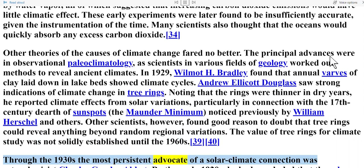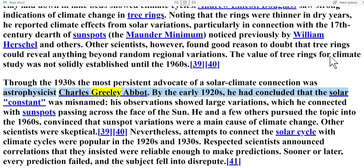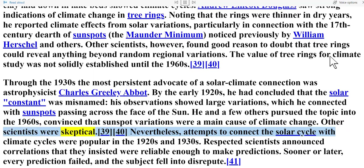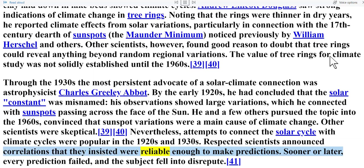Through the 1930s, the most persistent advocate of a solar-climate connection was astrophysicist Charles Greeley Abbot. By the early 1920s, he had concluded that the solar constant was misnamed — his observations showed large variations which he connected with sunspots passing across the face of the sun. He and a few others pursued the topic into the 1960s, convinced that sunspot variations were a main cause of climate change. Nevertheless, attempts to connect the solar cycle with climate cycles were popular in the 1920s and 1930s. Respected scientists announced correlations they insisted were reliable enough to make predictions; sooner or later, every prediction failed and the subject fell into disrepute.